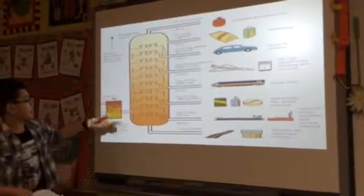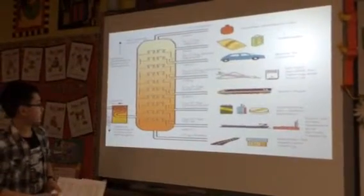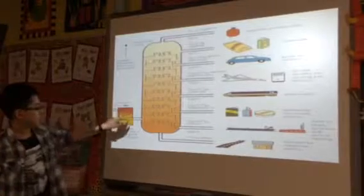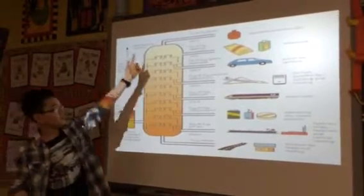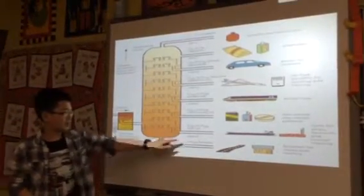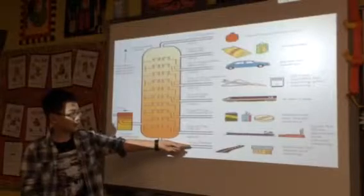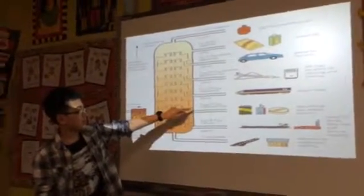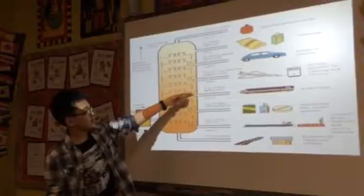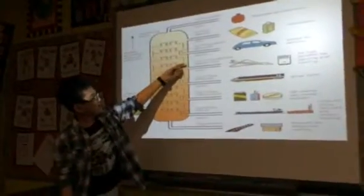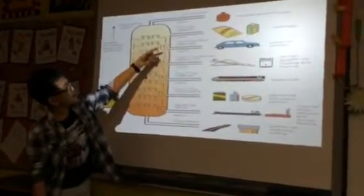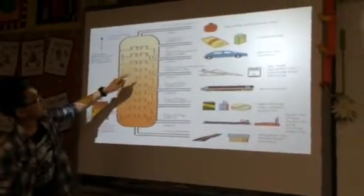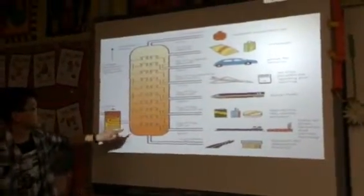This is a diagram of an oil refinery. It's sent through this boiler, and then the heat divides it up into different categories. In the bottom, it becomes stuff for roads and buildings. Moving up, this becomes fuel oil, lubricating oil, diesel oil, kerosene, petrol — like gasoline for cars — chemicals, and then liquefied petroleum gas.